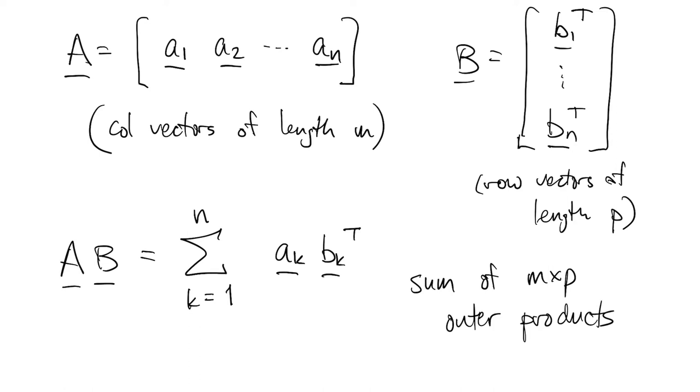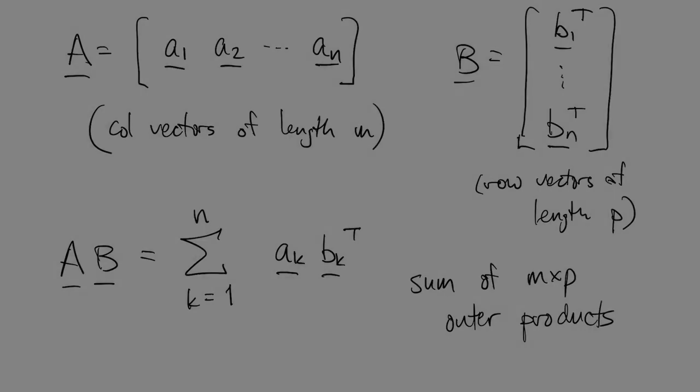This definition in terms of outer products is probably not familiar to you. It's the least commonly known one. But in some ways it's the most interesting one. It's interesting especially to see how it plays out in a special case where you have a matrix times a vector, one of the most common things that we have to do.